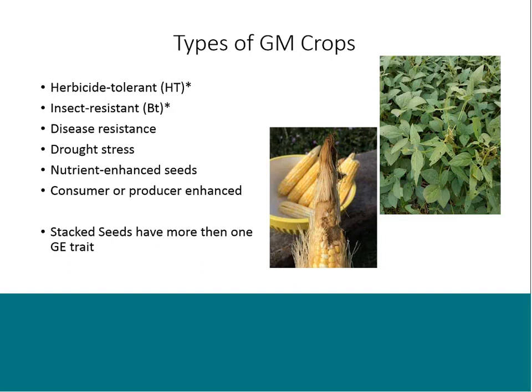What types of genetic modifications have been done to crops? The most common ones people think of are herbicide tolerant (HT) and insect resistant (BT). There are also disease-resistant crops — mainly the papaya and squash — and drought stress modifications. Nutritional enhancement and consumer or product enhancement are also options. 'Stacked seeds' are becoming more common — these are GMO crops that have more than one of these traits, such as corn with both herbicide tolerance and insect resistance.